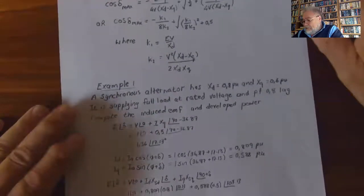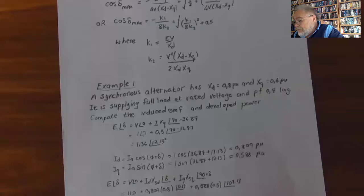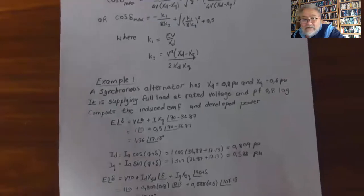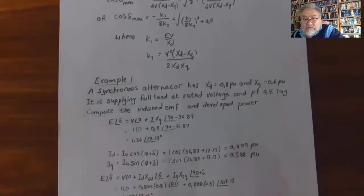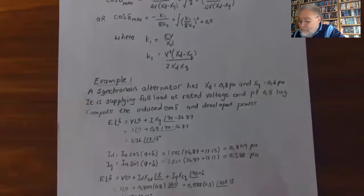Example: A synchronous alternator has Xd = 0.8 and Xq = 0.6 per unit. It is supplying full load at rated voltage and a power factor of 0.8 lagging. We have to compute the induced EMF and the developed power.